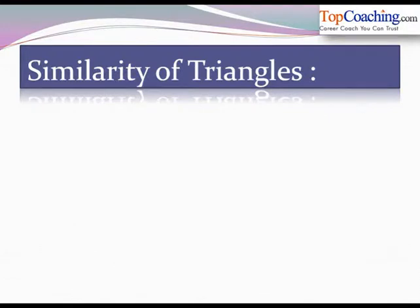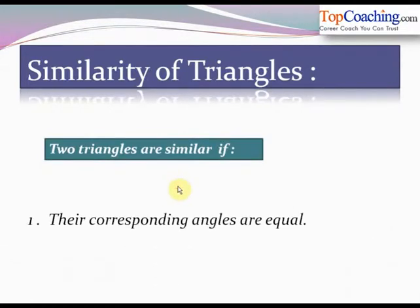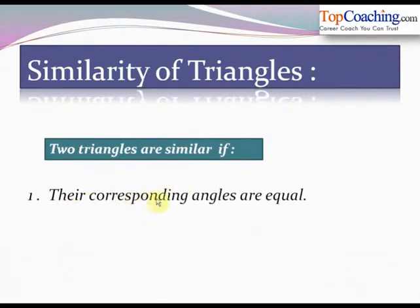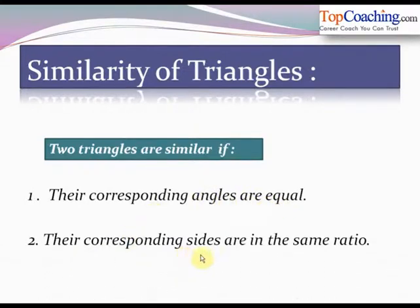In the previous lecture we tried to understand the concept of similarity of figures, and we are going to extend the same concept to understanding the similarity of triangles. Two triangles are similar if: the first condition is their corresponding angles are equal, and the second condition is their corresponding sides are in the same ratio or they are proportional to each other.